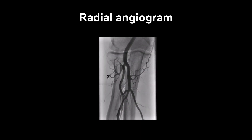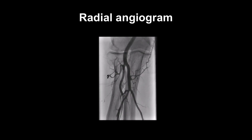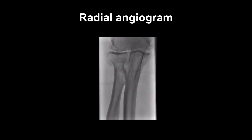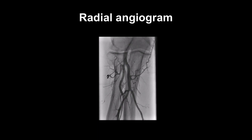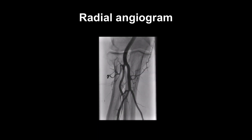We tend not to routinely take radial angiograms as contrast in the radial artery is quite irritant and can cause the patient some discomfort. However, if it's difficult to advance the catheter for any reason, then it's useful to take an angiogram to ensure there are no radial loops or that you have not entered a small branch, and to determine the best way of proceeding.